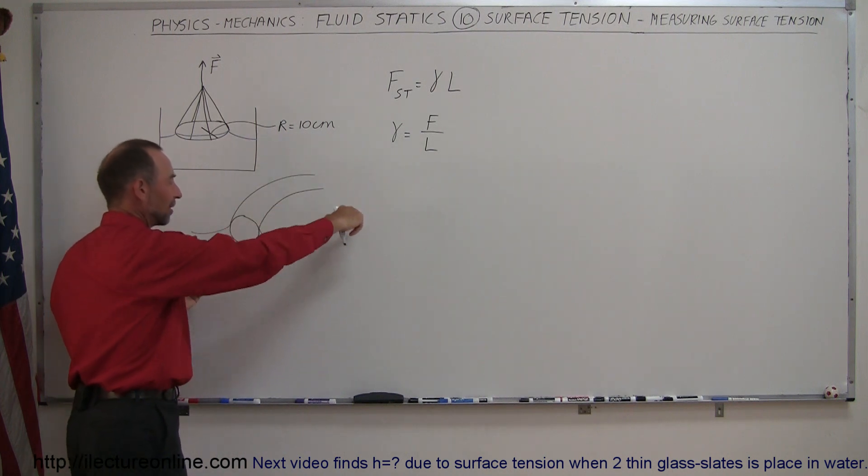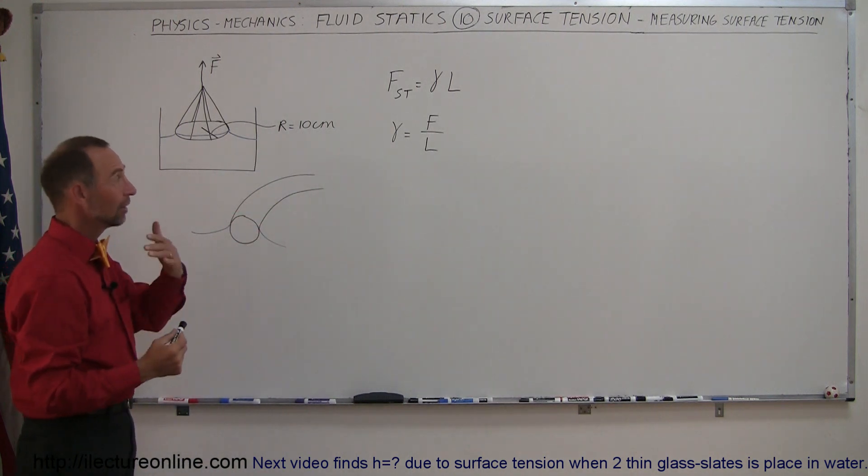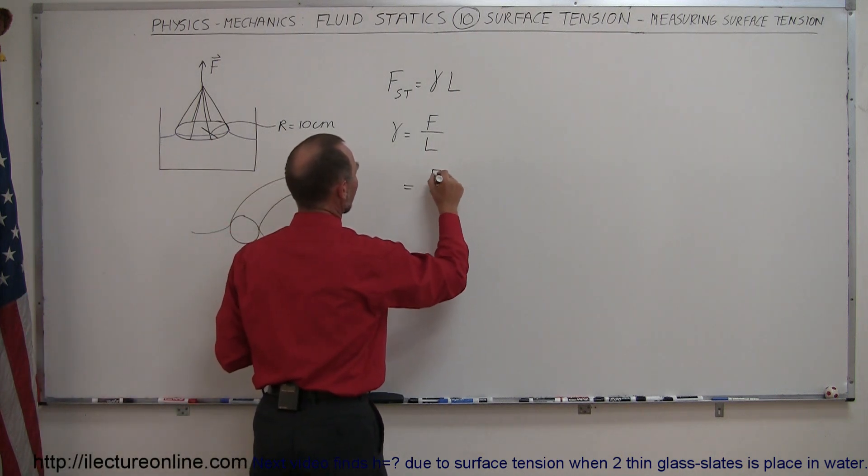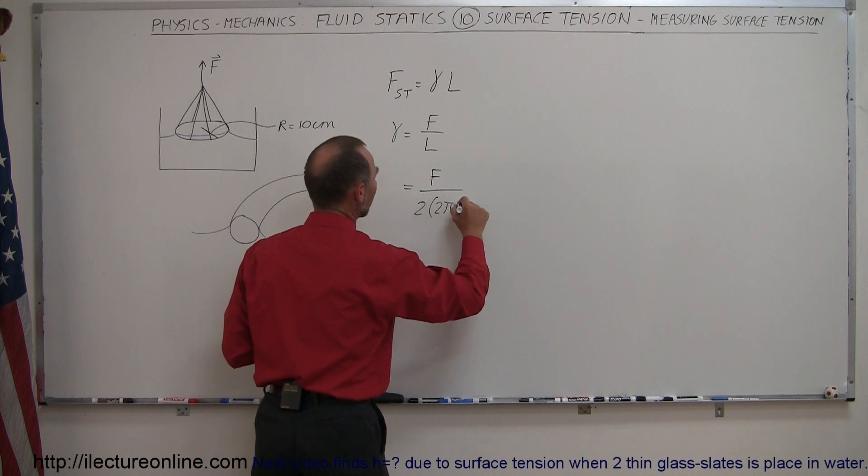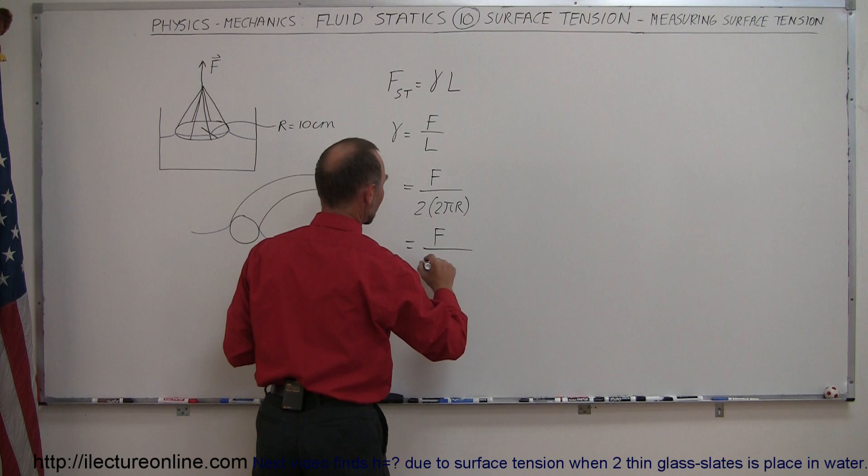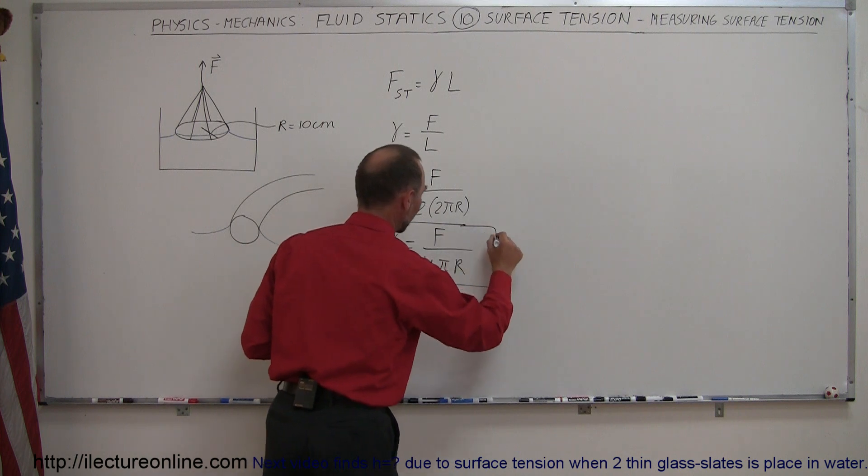So we have to take into account the inner surface and the outer surface of that wire, so it's twice the circumference or twice 2πr. This is equal to the force divided by 2 times the circumference, which is 2πr, which means that the surface tension can be calculated by taking the force divided by 4πr. And that's how they determine the surface tension of various liquids.